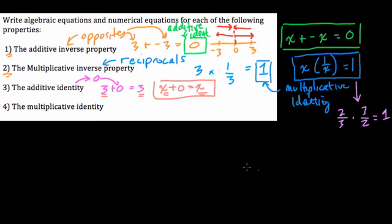And lastly, we have the multiplicative identity. Well, here, if I take any number, multiply it by 1, 1 is your multiplicative identity. So if I take anything, multiply it by 1, I get what I started with. Here, if I start with 3, I end with 3.